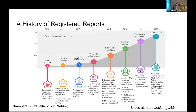In terms of history, registered reports started at two journals in 2013. Cortex, a cognitive and neuroscience journal in psychology, was one of the first adopters. Since then, the model has expanded broadly within psychology and other STEM journals, including the Royal Society for Open Science, political science, and clinical trials. Recently we're seeing many registered reports on the COVID-19 pandemic and integration into clinical research.